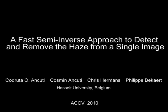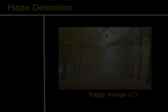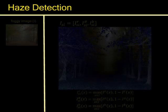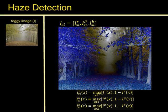In this paper we introduce a novel single image dehazing approach. Considering only the input foggy image, the presented algorithm allows for fast identification of hazy regions. By only applying a single per pixel operation on the original image, we produce a semi-inverse version of the image.